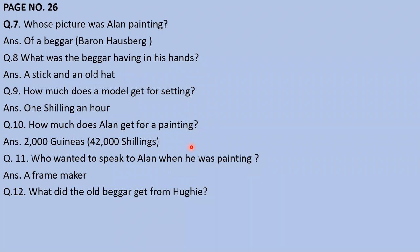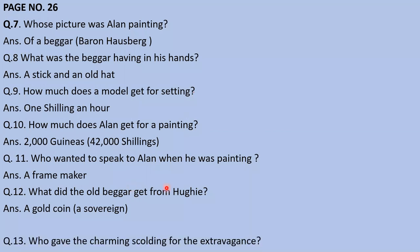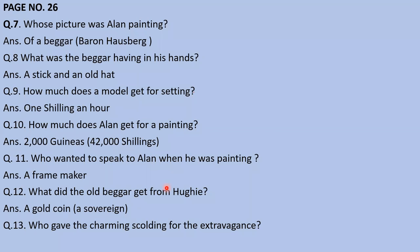Next question: What did Hughie give to the old beggar? Saipateek answers: 'A gold coin' — a sovereign. Very good, right answer! Last question: Who gave the charming scolding for the extravagance? Nikunj answers: 'Laura Martin.' Yes, Laura Martin gave Hughie a charming scolding for his extravagance. Very good right answer!